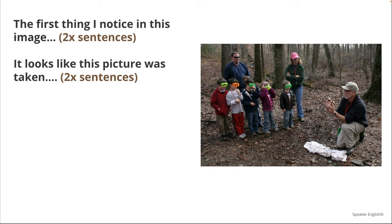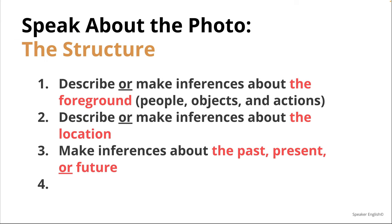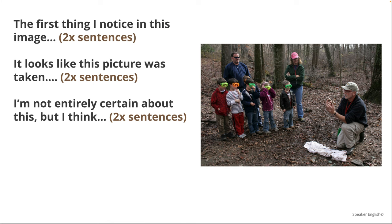We started with the foreground, talked about the location. Next, you're going to talk about the past, present, or future — make inferences, make guesses about what's going on. You can use the phrase: 'I'm not entirely certain about this, but I think...' For example: 'I think this is a school trip where some young kids about seven or eight years old are learning about different organisms and species that live in this forest. I imagine that after this picture was taken, the kids and the entire group would keep walking and move on to another area where they would find a different species or artifact to look at and talk about.'